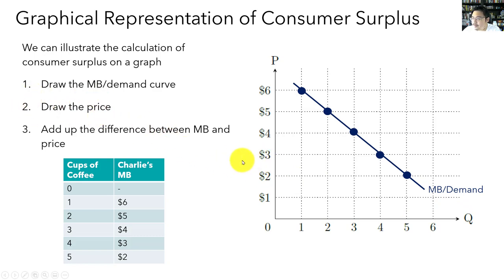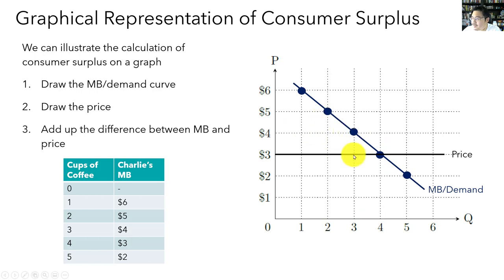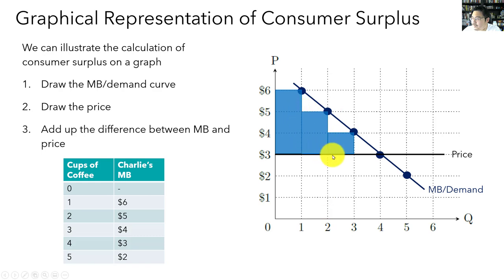At a price of $3, Charlie consumes four units. We add up the differences between marginal benefit and price, represented as bars. For the first unit: $6 − $3. For the second: $5 − $3. For the third: $4 − $3. For the fourth, marginal benefit equals price, so the bar is zero. If we add up the areas of these bars, we get $6 — exactly the consumer surplus we calculated previously.